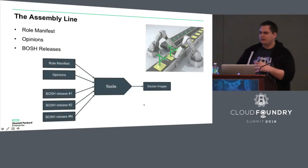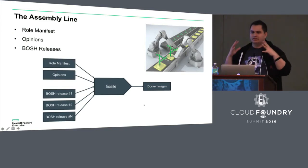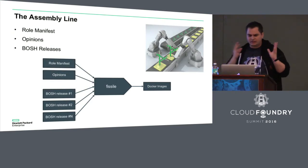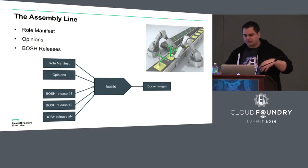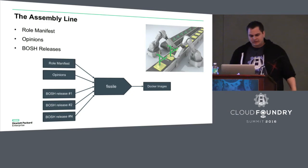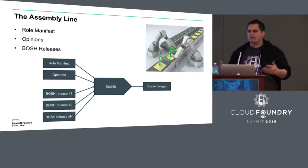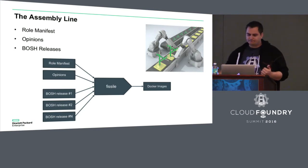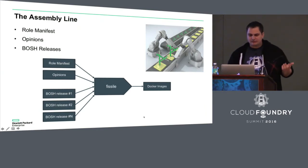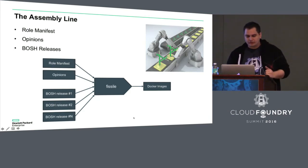Now we know how the layers are created for these images and how the packages get compiled. What else do we need for Fissile to do its job and give us Docker images for basically all of the BOSH releases? We need BOSH releases that have been built — the dev BOSH releases, not final BOSH releases. We need a role manifest and opinions. These are all required at build time, not at deployment time. Using all this information, Fissile will be able to output Docker images.